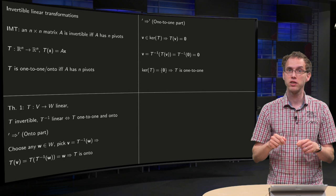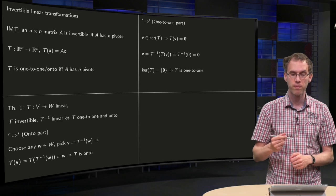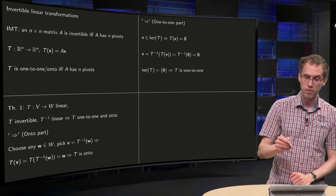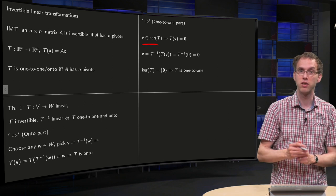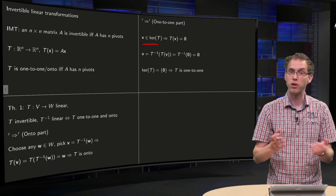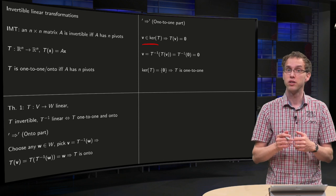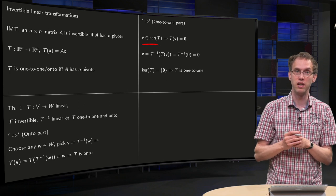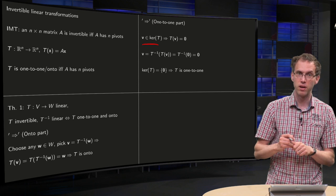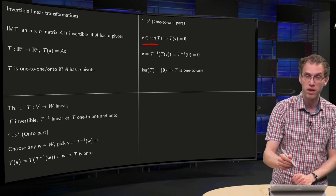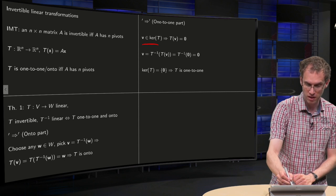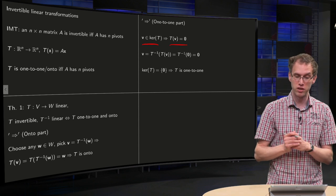Now the 1-to-1 part, why can you do that in only one way? Well, for that we look at the kernel. Suppose your v is in the kernel of T, we have to show that our kernel is trivial. We have to show that this v is the, so your whole kernel consists of only the zero vector. If your v is in the kernel of T, then T(v) is zero by definition.